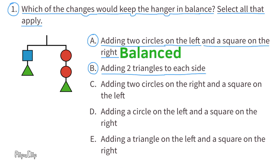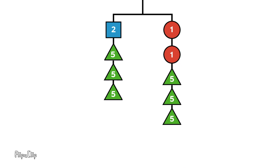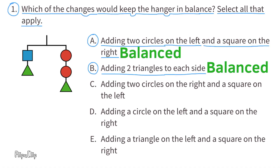B: Adding two triangles to each side. If we added two triangles to each side, we'd be adding the exact same amount on each side. Two triangles are worth 10, so we'd be adding 10 to the right and 10 to the left. The left side totals 17, and the right side totals 17, so this hanger would also be balanced.